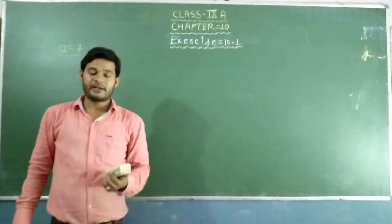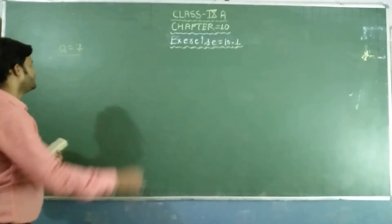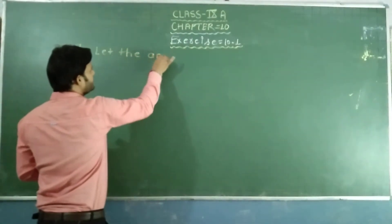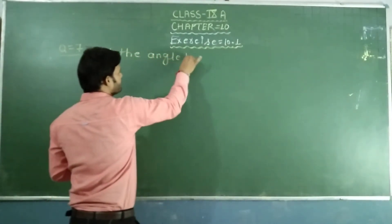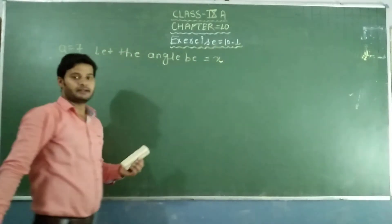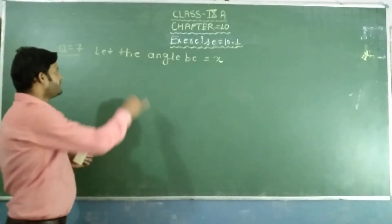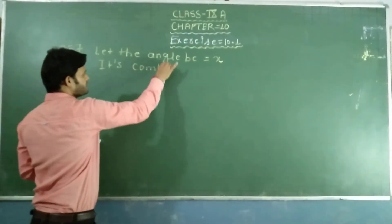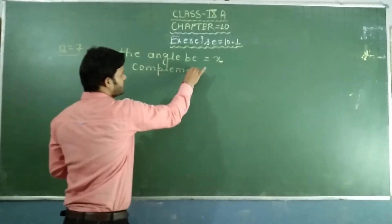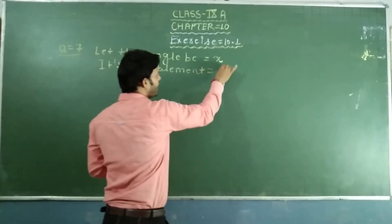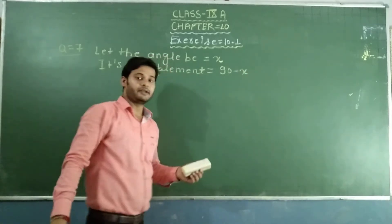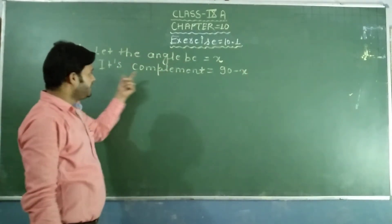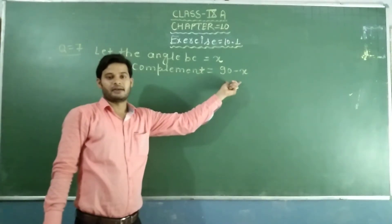So, let the angle be x. Its complement is equal to 90 minus x. As I told you earlier, let the angle be x and its complement equals 90 minus x.